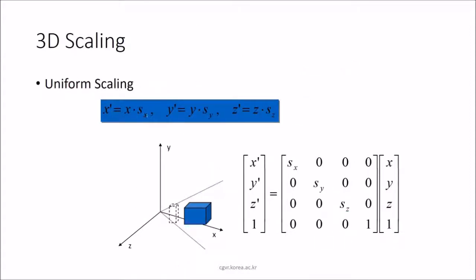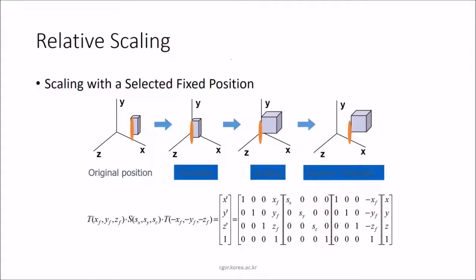Uniform scaling means scaling a 3D figure uniformly in the x, y, and z directions. The matrix has sx, sy, sz on the diagonal. Unlike translation which uses addition, scaling multiplies each coordinate: x is multiplied by sx to get new coordinate x-dash, likewise for y-dash and z-dash.